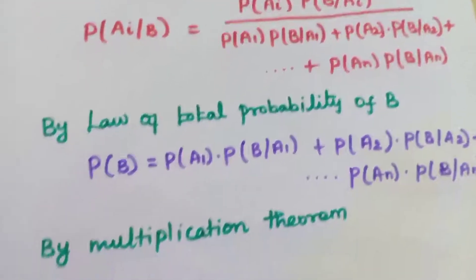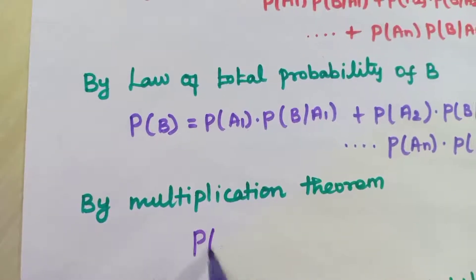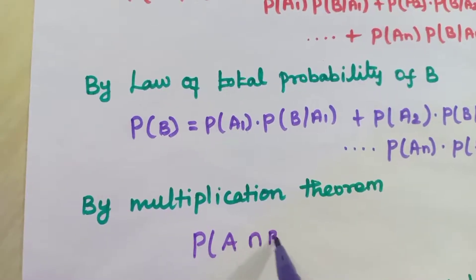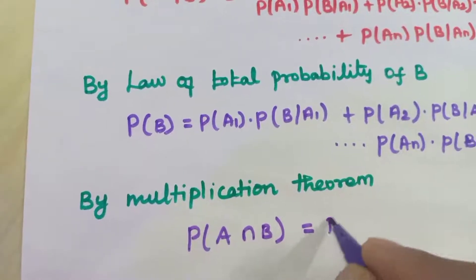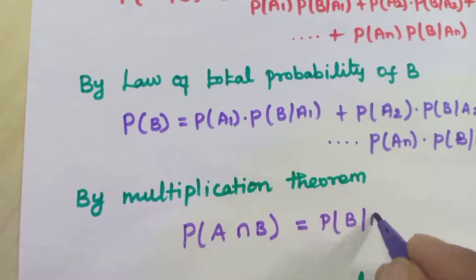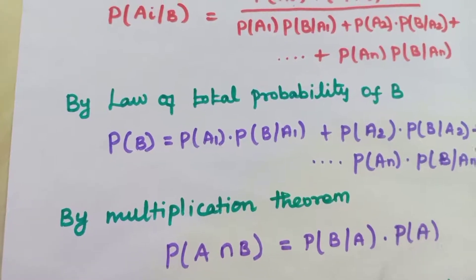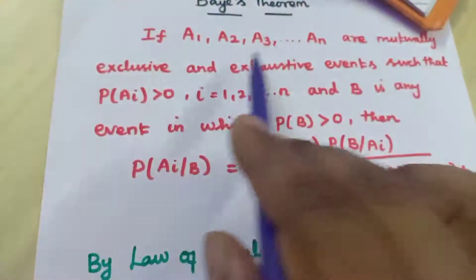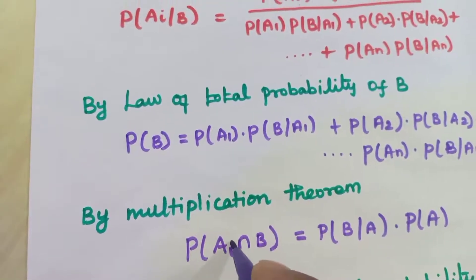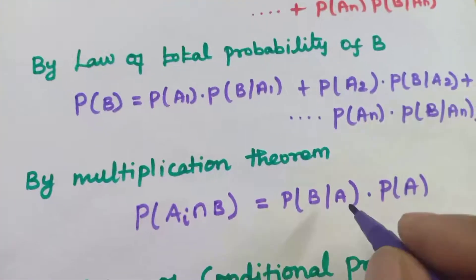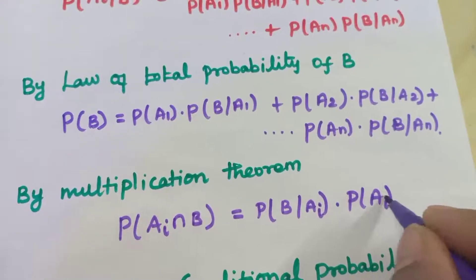Next, we consider the multiplication theorem. What do we know about that? Probability of A intersection B is equal to probability of B over A into P(A). Since we have N events, instead of A we write: probability of Ai intersection B is equal to probability of B over Ai into probability of Ai.